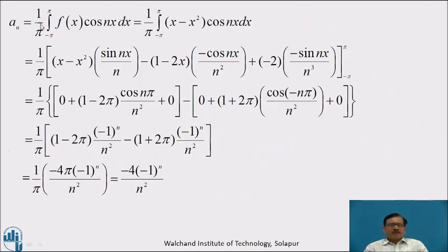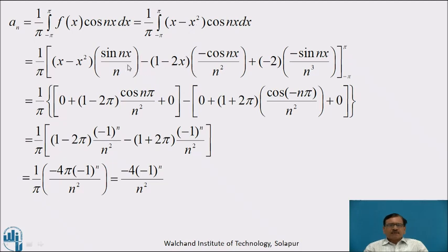Now we calculate aₙ. aₙ equals 1 by π integration from minus pi to pi of f(x) cos(nx) dx, which equals 1 by π integration from minus pi to pi of x minus x square into cos(nx) dx. To integrate x minus x square into cos(nx), we use the generalized rule of integration by parts. We take u as x minus x square, and integration of cos(nx) is sin(nx) by n, minus the sign of the rule: derivative of x minus x square is 1 minus 2x.